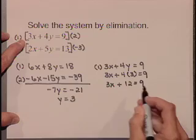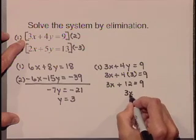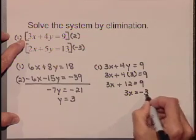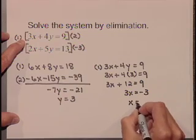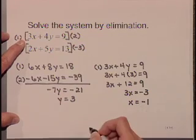Subtracting 12 from both sides, we have 3x equals negative 3. Dividing by 3, x equals negative 1.